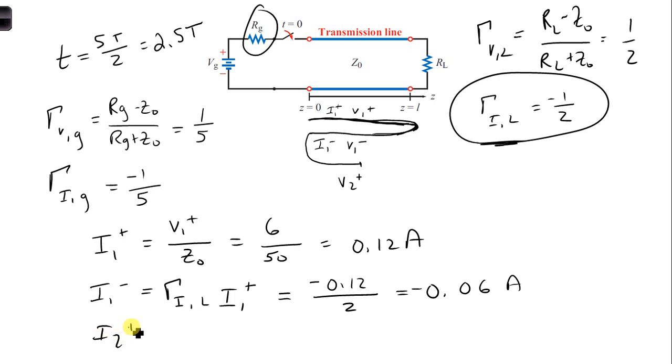And then for I2 plus, we're going to take I1 minus, because that's the wave that is propagating back towards the generator. It's the wave that's incident on the generator side, and it's going to reflect. So I'm going to take I1 minus, and I'm going to multiply by the reflection coefficient of the current at the generator. And plugging in our numbers, our reflection coefficient is minus 1 fifth, and I1 minus is minus 0.06, so simplifying, we get 0.012 amps.